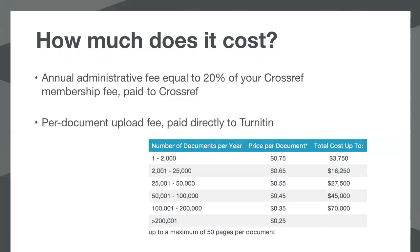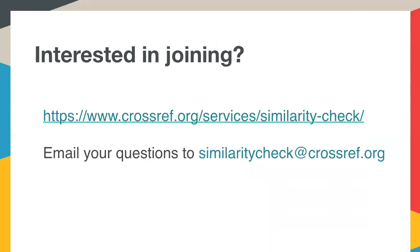So the costs. There are two fees for Similarity Check. There's an annual admin fee equal to 20% of your Crossref membership fee, payable to Crossref, and a much-reduced per-document upload fee paid directly to Turnitin. As you can see on the chart, this decreases with bulk uploads — for the first 2,000 documents per year you'd pay 75 cents per document, and above that it decreases. If you're interested in joining, go to crossref.org/services/similarity-check for more information, links to agreement forms, and other documentation. If you have any questions, you can email similaritycheck@crossref.org. And that is the end.